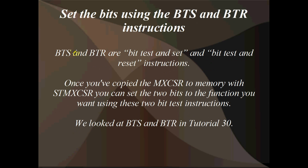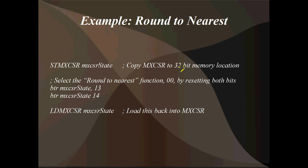So how do you set the bits? We use BTS and BTR - bit test and set, and bit test and reset instructions. Once you've copied MXCSR to memory with STMXCSR, you can set the two bits using these two operations to whatever you want. We looked at BTS and BTR in depth in tutorial 30. Here's an example: for this one, we want to select function 00, or round to nearest. We store MXCSR to a 32-bit memory location defined in the data segment, and that copies the state of MXCSR to that variable.